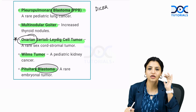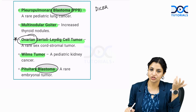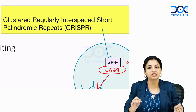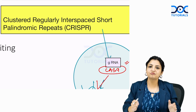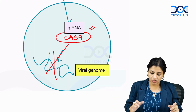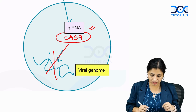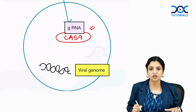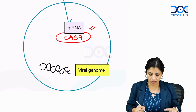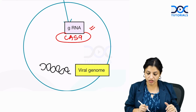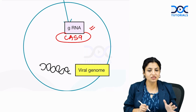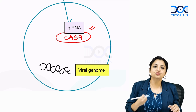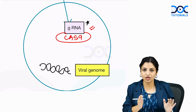Now let's come to knockout technology — CRISPR. CRISPR stands for Clustered Regularly Interspaced Short Palindromic Repeats. These molecules are not found in humans; they are found in bacteria. Viruses put their genome into bacteria to make them bacteriophages, and to prevent this, bacteria developed CRISPR, which is converted into gRNA.